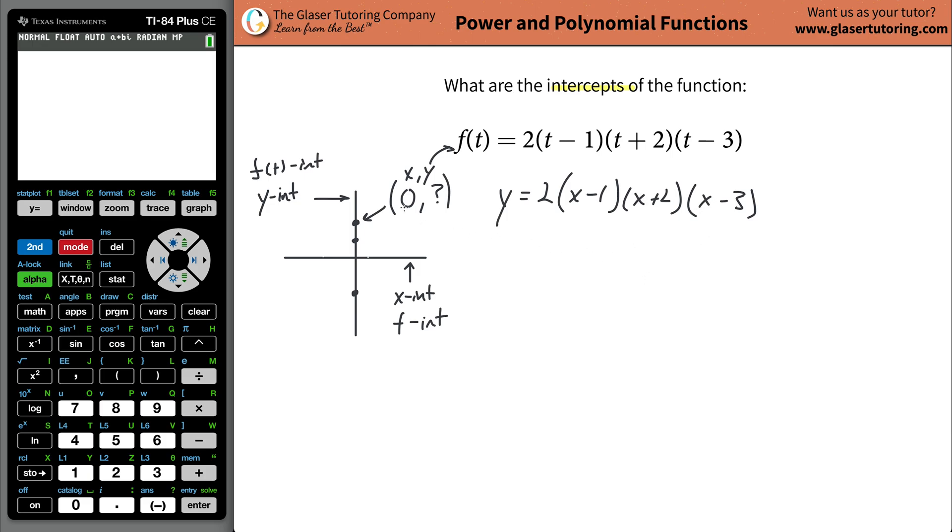Now, I know that everywhere I see x in my equation, it's going to be zero. So I'm going to plug in the values of zero where I see x. So it's going to be y equals 2 times zero minus 1, zero plus 2, zero minus 3.